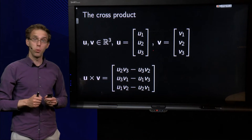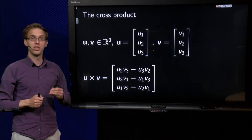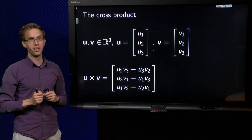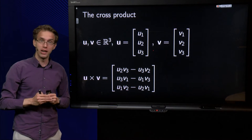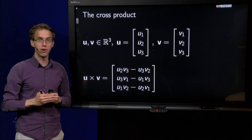You have already learned one way to multiply two vectors, the so-called inner product. You can also multiply two vectors in another way, using the so-called cross product.